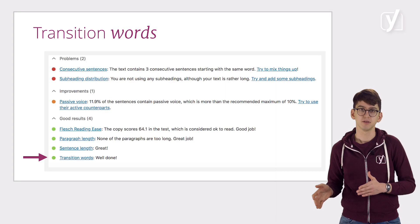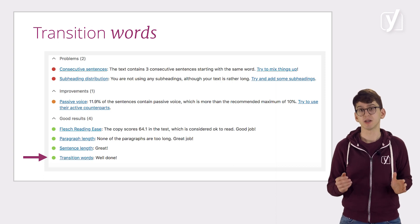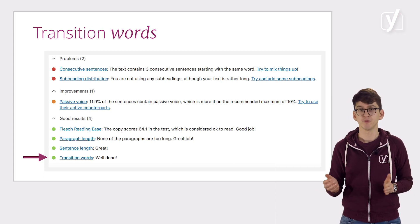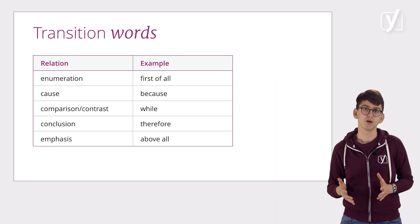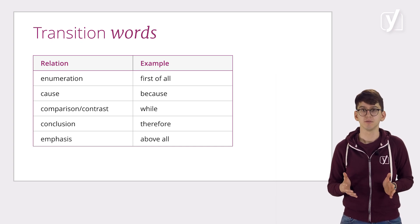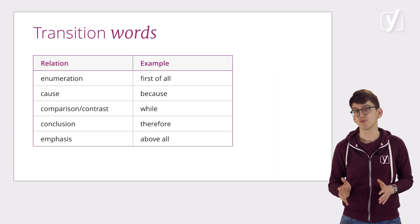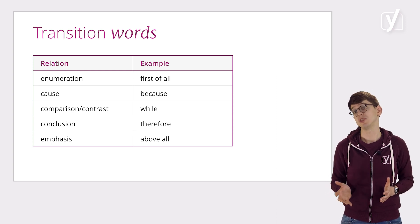So those were the checks for individual sentences. Let's now zoom out a bit and look at the relationships between sentences. For this, we check your use of transition words, such as 'because' and 'therefore'. By using these words, you can make the structure of your text much clearer. In doing so, you'll let your reader know what kind of information comes up next, making reading the text much easier.